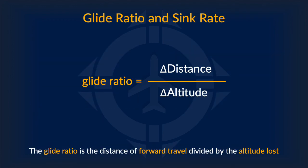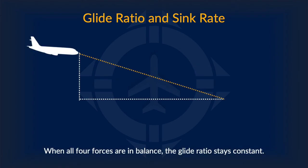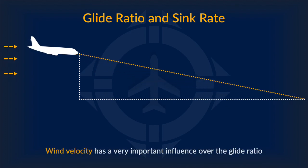Now we move on to some new terms. Glide ratio is simply the distance of forward travel divided by the altitude lost. A high glide ratio means that you move a long distance when your altitude changes, while a small ratio means you move just a small distance. When all four forces of flight are in balance, the glide ratio is constant. Wind has a powerful effect on glide ratio — tailwind allows your airplane to move faster, greatly increasing glide ratio.